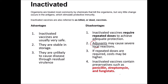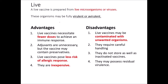A live vaccine is prepared from a live microorganism or virus. These organisms could be fully virulent, meaning they're going to cause the disease, or they could be avirulent, meaning they're not really going to cause a disease. Live vaccines necessitate fewer doses to achieve an immune response. Adjuvants are unnecessary, but the vaccine could contain preservatives, so there's less risk of an allergic response, but they are going to get a little bit of the disease. They tend to be inexpensive. Sometimes live vaccines can be contaminated with unwanted organisms, so they require careful handling. They don't tend to store as well as inactivated vaccines and may possess some residual virulence.